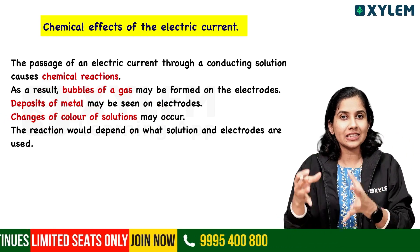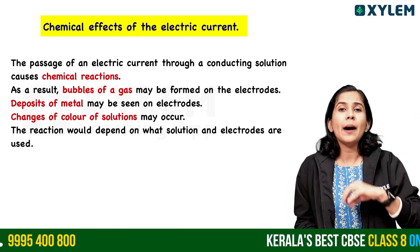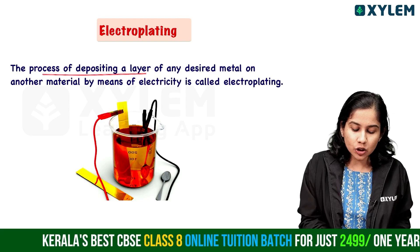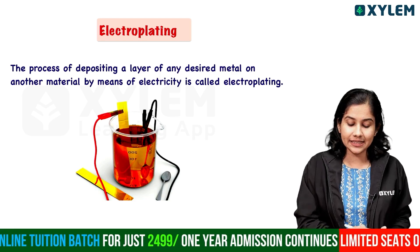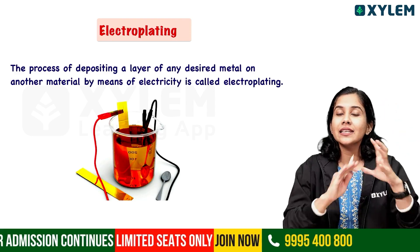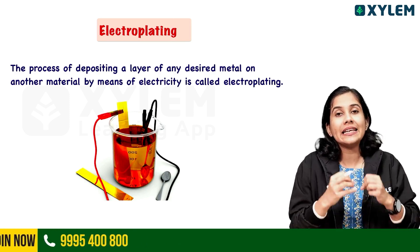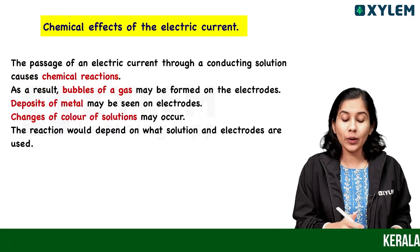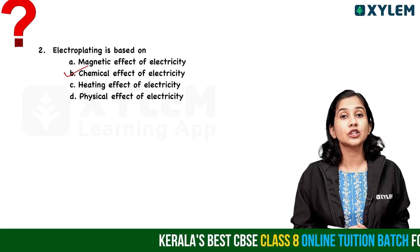How can we observe the chemical effect? Electric current passes through a conducting solution. What is electroplating? The process of depositing a layer of any desired metal on another material by means of electricity is called electroplating. The answer to this question is option B — chemical effect of electricity.